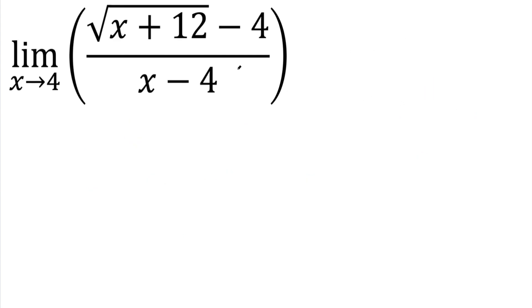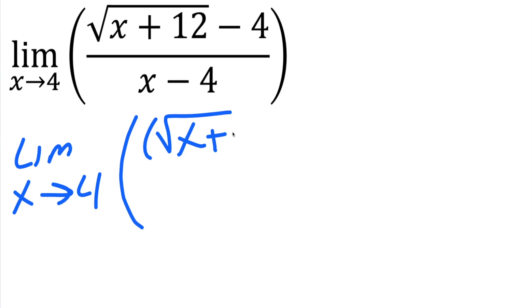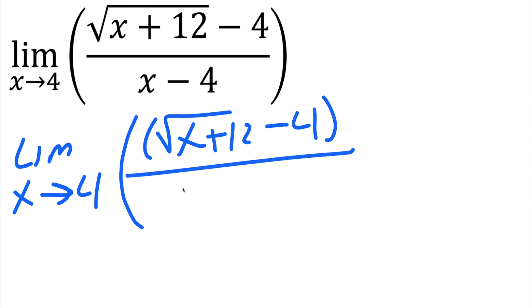So what I'm going to do is multiply by the conjugate. I'll write the limit of x approaching 4, with the square root of x plus 12 minus 4 in the numerator, divided by our denominator.